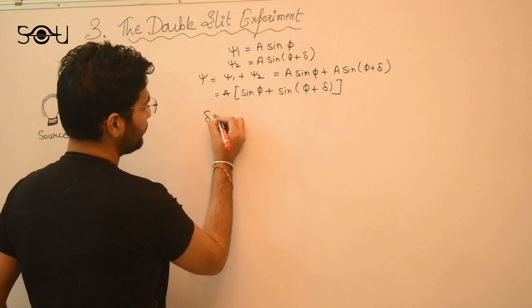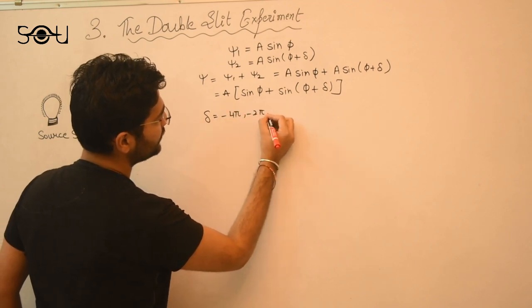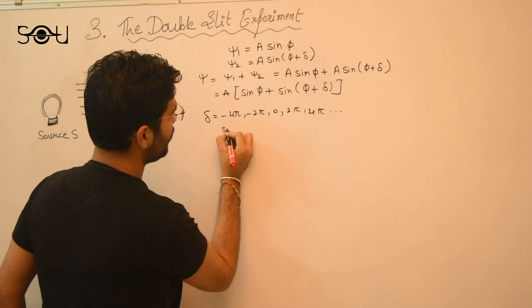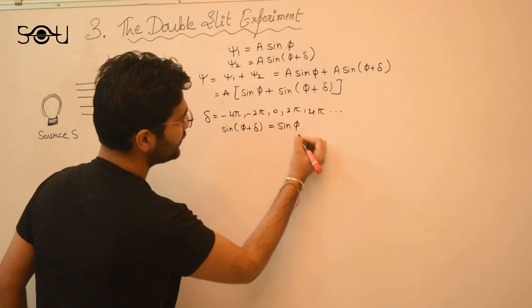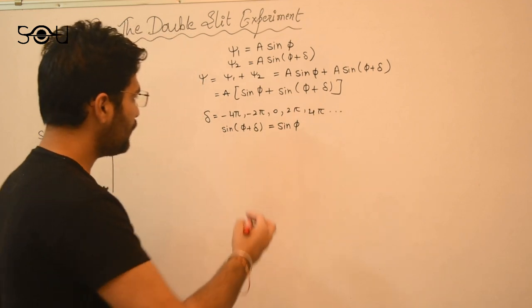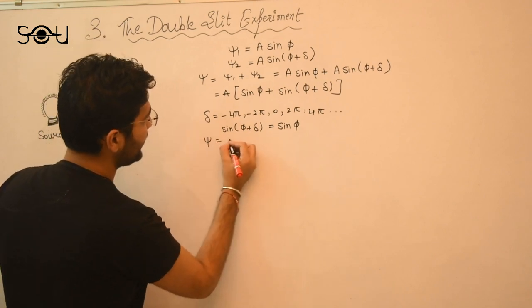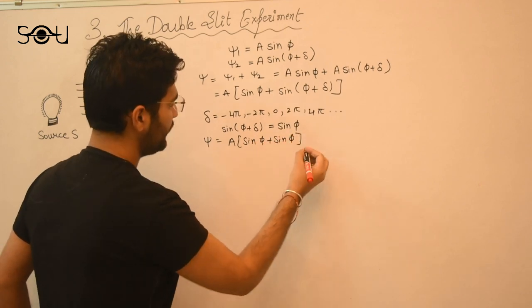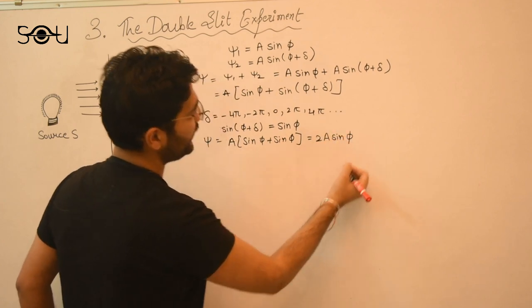First is that when delta is an even multiple of pi. That is, it can be minus 4 pi, minus 2 pi, 0, 2 pi, 4 pi and so on. This quantity, sin of phi plus delta becomes nothing but sin phi. Why is that? Because sin has a period of 2 pi. It means that it repeats its value after 2 pi. So it becomes nothing but sin of phi only. So xi will be, in this case, A sin phi plus sin phi which will be 2 A sin of phi.